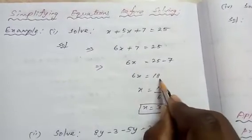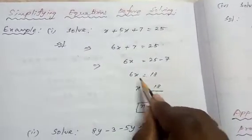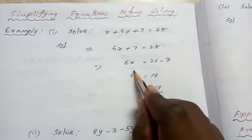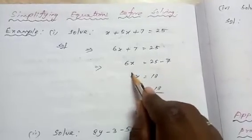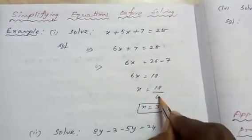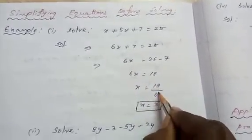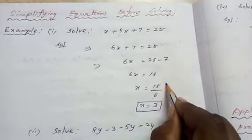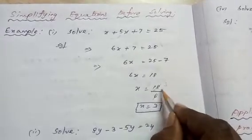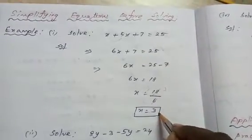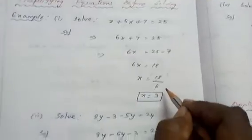So 6x = 18. To find the value of x, since 6 is multiplied, transposing to the other side means dividing by 6. 18 divided by 6 equals 3. So the answer is x = 3.